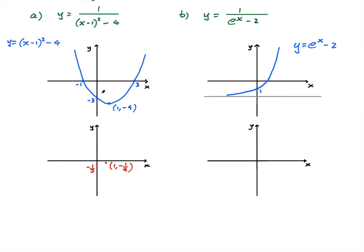Now, what happens with the roots of the quadratic? This becomes 1 over 0. When we have 1 over 0 on a graph, as it approaches 0, 1 over f(x) will approach infinity and ultimately become an asymptote. So we're going to have a vertical asymptote at x equals negative 1, and similarly an asymptote at x equals 3. This is x equals negative 1, and this is x equals 3.